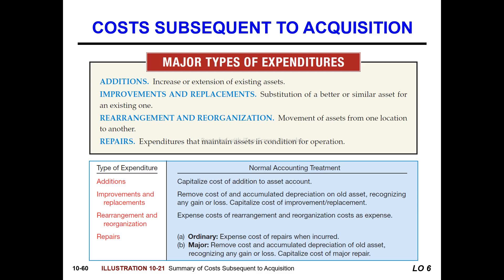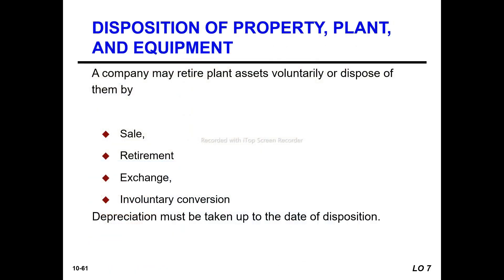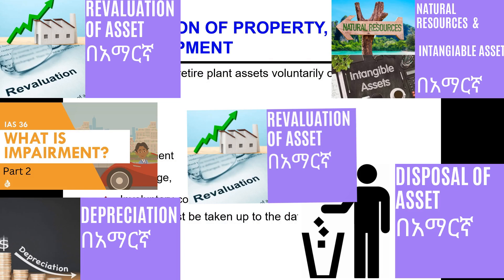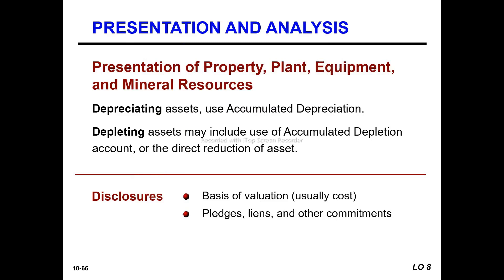Next, disposals of plant assets. Depreciation, impairment, and revaluation have been covered in previous videos. Disposals — the depreciation, impairment, and seller evaluation — have been discussed in earlier channel videos. Now let's move to the last topic.